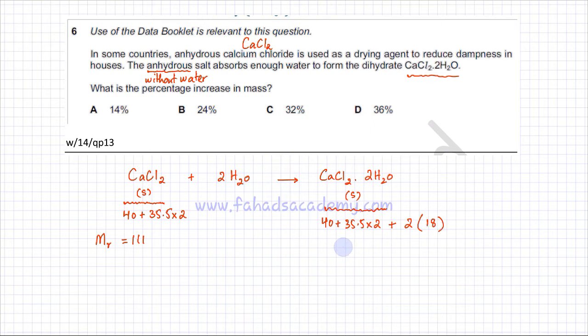And if I add this up, this would be equal to 111, plus 2 into 18 is 36, and using my calculator, that gives me a value of 147. So this is the MR, which is 147 for dihydrate.